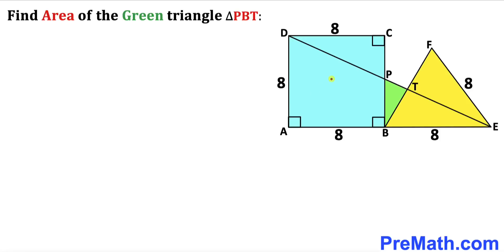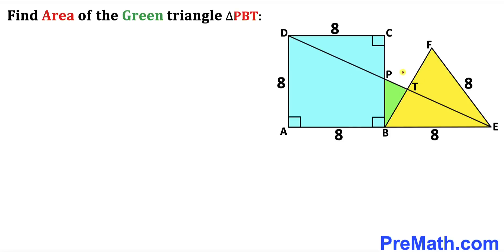Welcome to Premath. In this video we have a blue square and a yellow equilateral triangle, as you can see in this diagram, such that their side lengths are 8 units. We also have this diagonal line DE, and as a result we get this green shaded triangle PBT. Our task is to calculate the area of this green shaded triangle PBT.